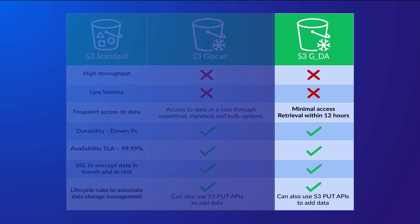S3 Glacier Deep Archive. Out of all the storage classes offered by S3, Glacier Deep Archive is the cheapest, and being a Glacier class it focuses on long-term storage. This is an ideal storage class for circumstances that require specific data retention regulations and compliance with minimal access, such as those within the financial or health sector where data records might need to be legally retained for 7 years or even longer. The durability and availability matches that of S3 Glacier: 11 nines of durability across multiple AZs with 99.9% availability. Deep Archive does not offer multiple retrieval options; instead AWS states that the retrieval of data will be within 12 hours or less.